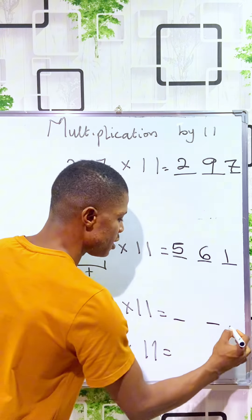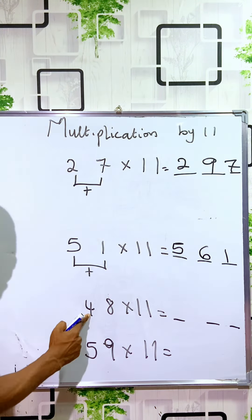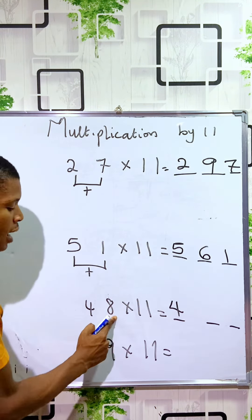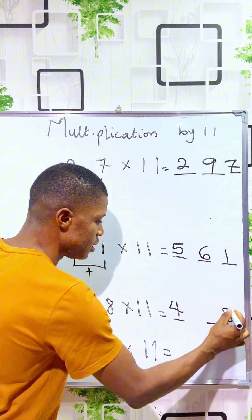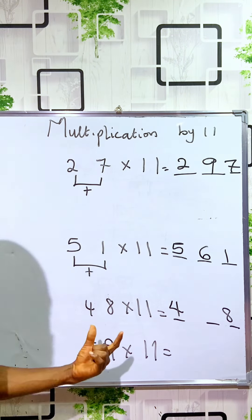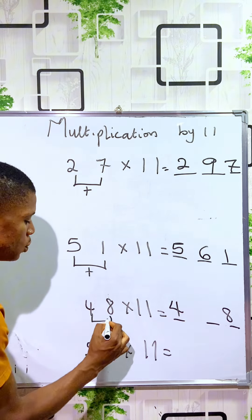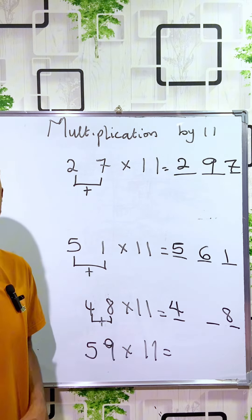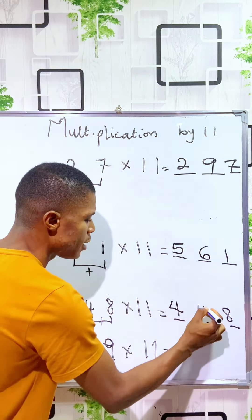For the next one, we create three spaces again. The first column will be filled by the first digit, and the last column will be filled by the last digit, 8. Then for the middle term, we add the two digits. If you add 4 to 8, you have 12. Are we gonna write 12 here?